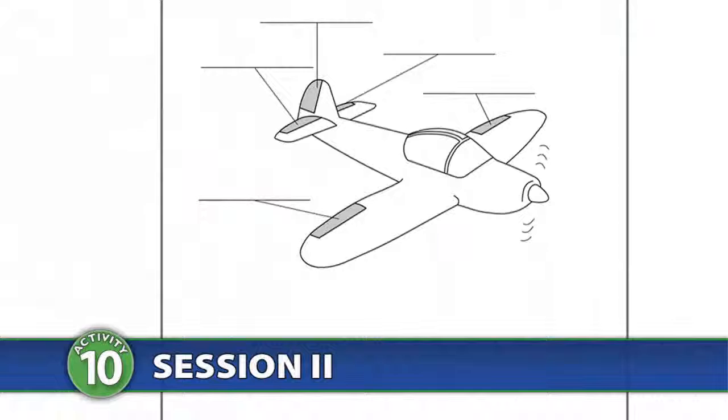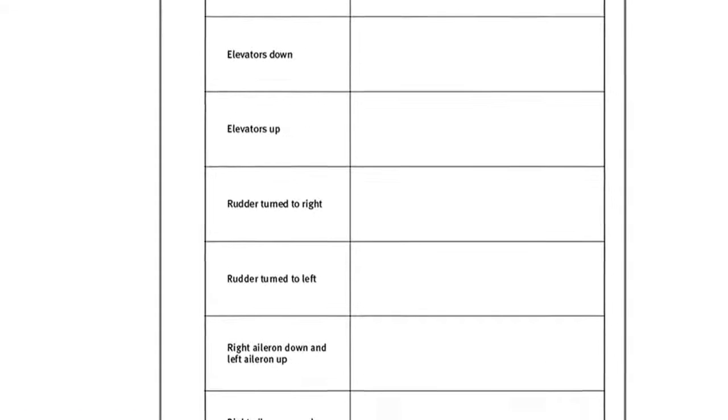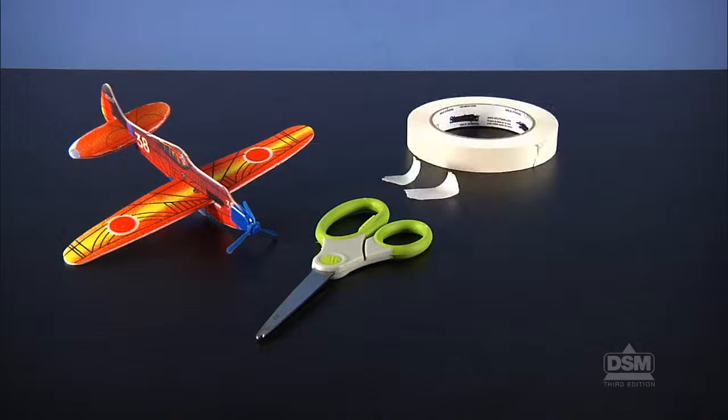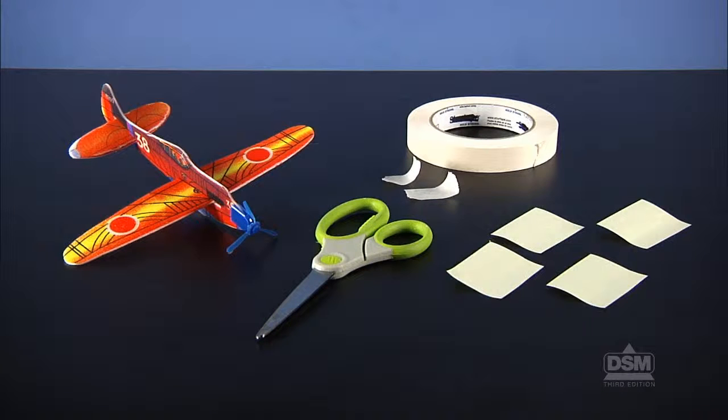To prepare for Session 2, make a copy of Activity Sheet 10, Parts A and B, for each student. Each team will need their foam glider, a pair of scissors, some masking tape, and four small sticky notes. Have extra sticky notes available throughout the session.